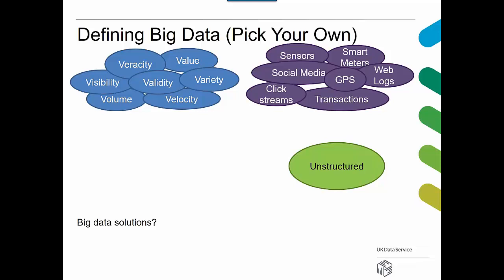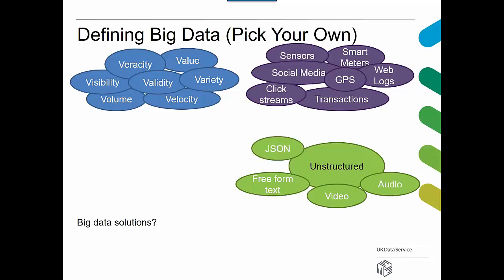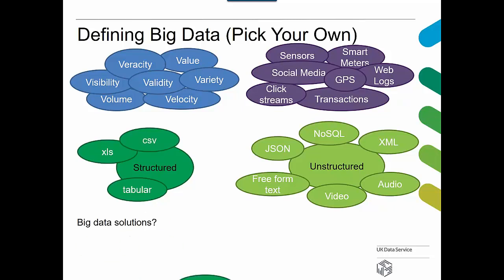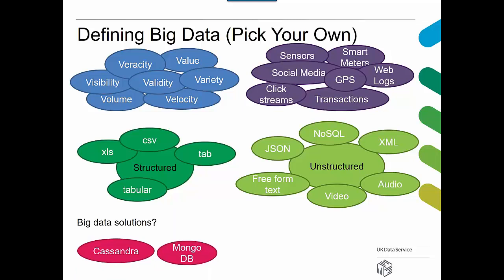Big data is quite often associated with unstructured data — free form text, audio, video. It's stored in different formats like JSON and XML, and often in NoSQL type databases. We've also got structured data, which is normally associated with more traditional small data. But of course, if a table's big enough, it's going to be big data. Tools for processing big data include Cassandra, MongoDB, and the one we're going to talk about today: Hadoop.